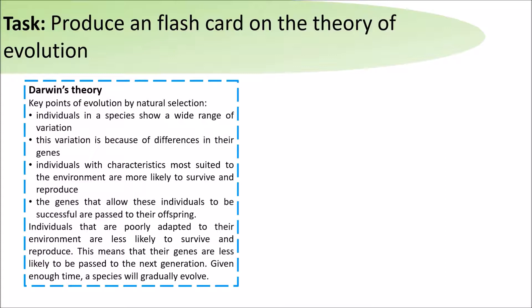Darwin's theory of evolution: the key points of evolution by natural selection are that individuals in a species share a wide range of variation. This variation is because of the differences in their genes. Individuals with characteristics most suited to the environment are more likely to survive and reproduce.